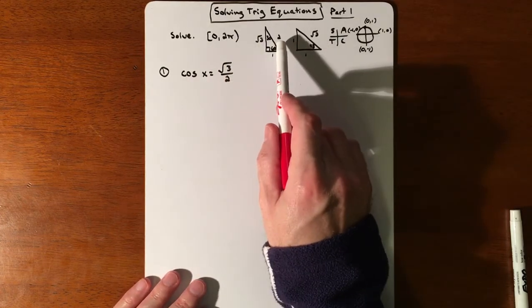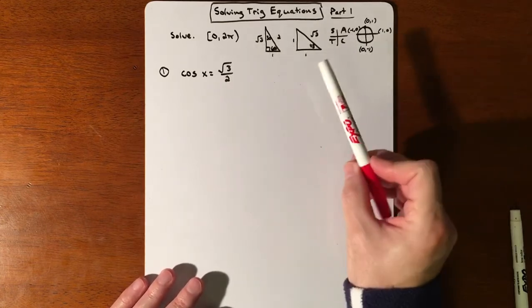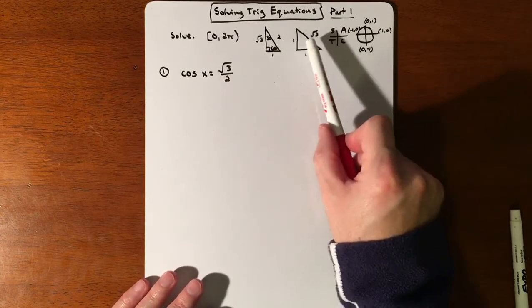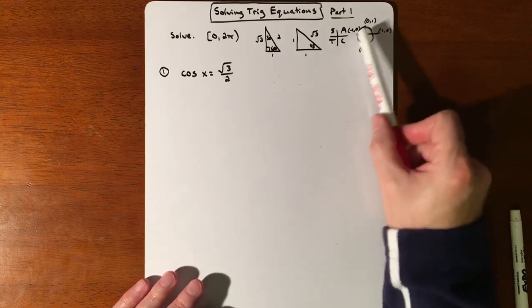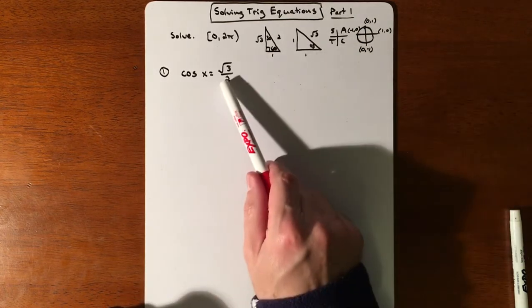Most of these problems are set up to be non-calculator. So our answers are going to have a tendency to come from our special triangles and points on our circle, and then CAST rule to help us figure out positives and negatives.